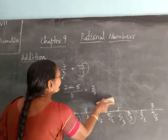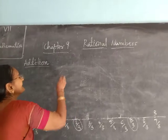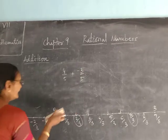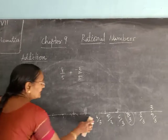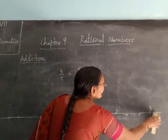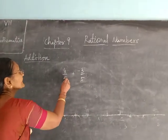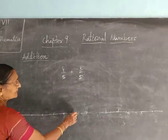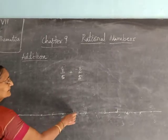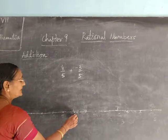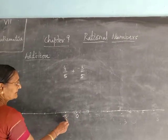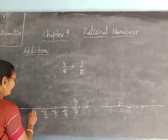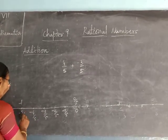Suppose the question is 4 by 5 plus minus 3 by 5. Then how will you do? You will locate where the numbers are, between negative and positive numbers. The denominator is 5, so you divide the number line between 0 and minus 1 into 5 parts and 0 to plus 1 into 5 parts. So: 0 by 5, minus 1 by 5, minus 2 by 5, minus 3 by 5, then minus 4 by 5, and minus 5 by 5 means minus 1.